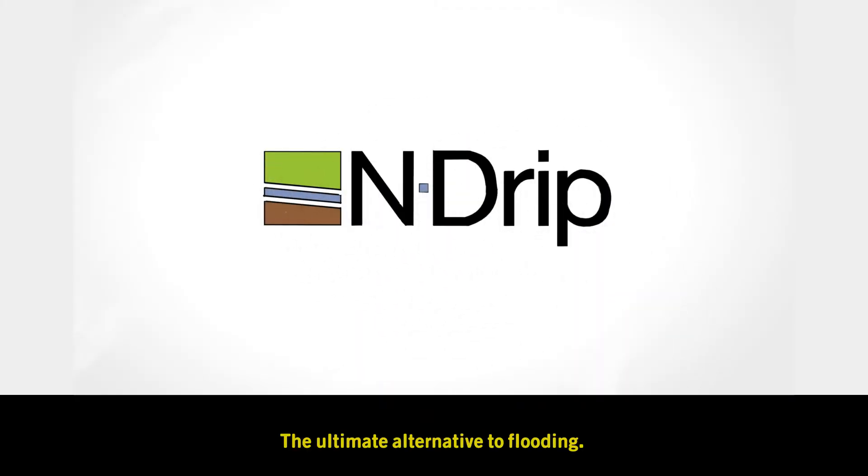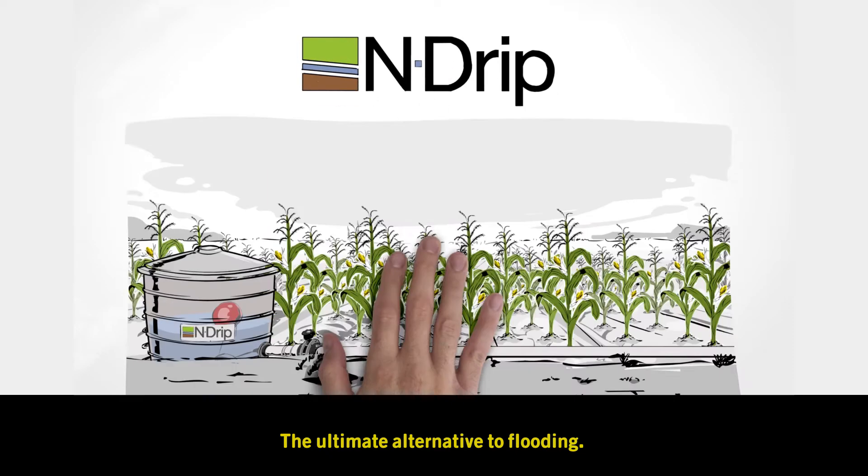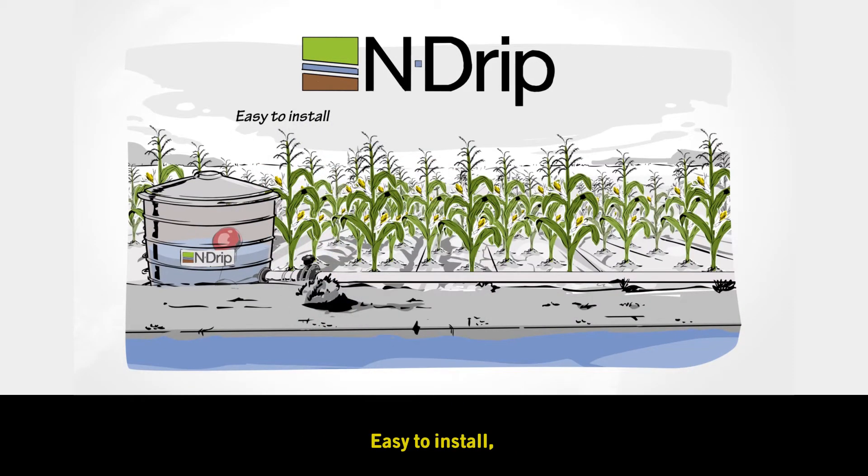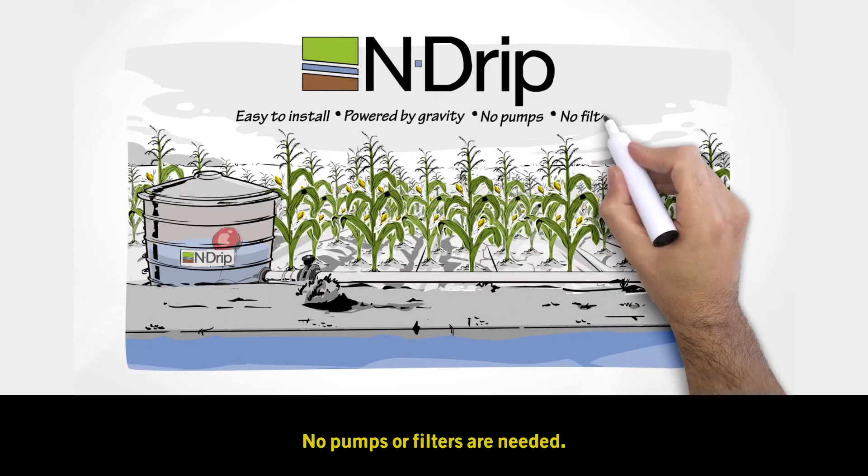Introducing Endrip, the ultimate alternative to flooding. Easy to install, Endrip is a micro-irrigation system powered by gravity only. No pumps or filters are needed.